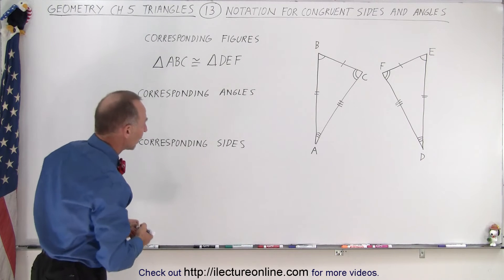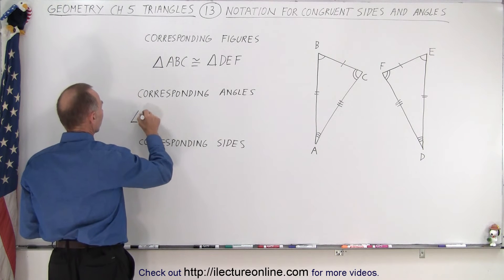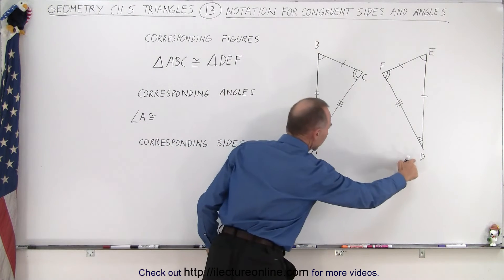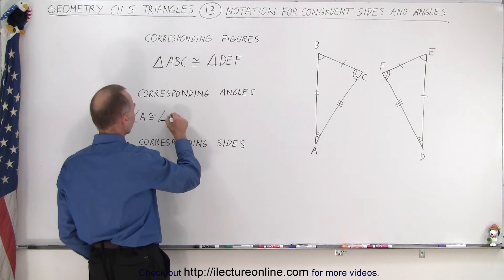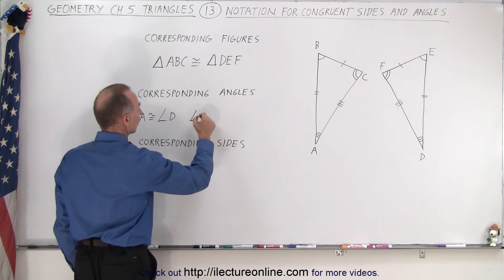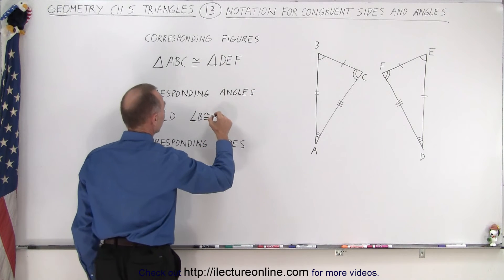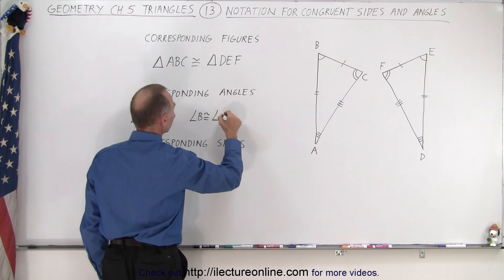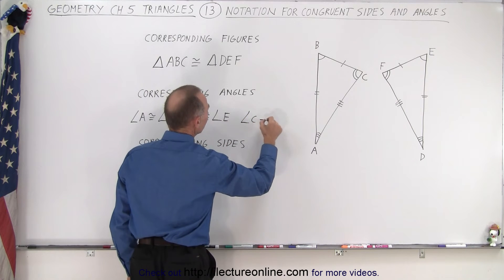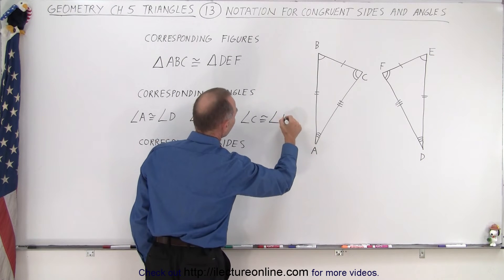How about corresponding angles? We can write that angle A is congruent to the corresponding angle D. We can also say that angle B is congruent to the corresponding angle E, and we can write that angle C is congruent to corresponding angle F.